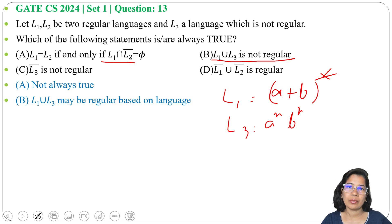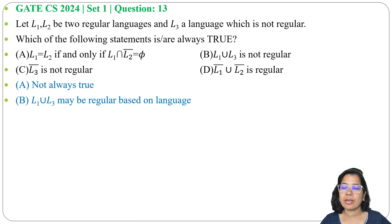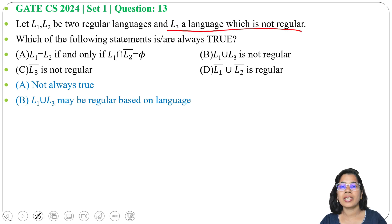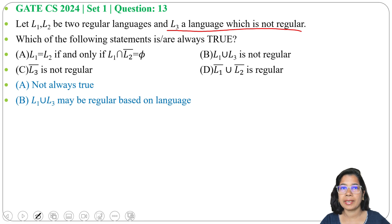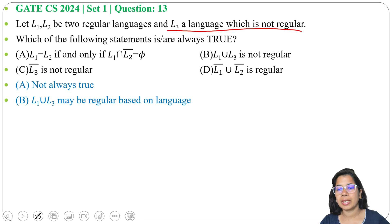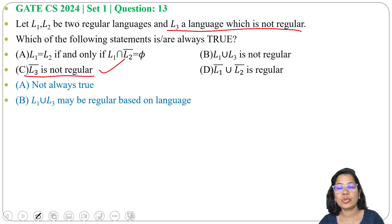Option C: L3 complement is not regular. L3 is not a regular language. Regular languages are closed under complement, but since L3 is not regular, it may be context-free or recursively enumerable — classes which are not closed under complement. Therefore, L3 complement is also not regular. This statement is true.